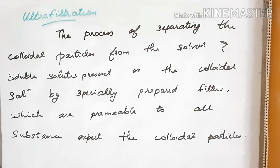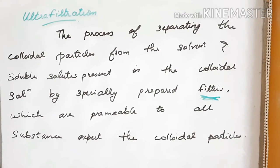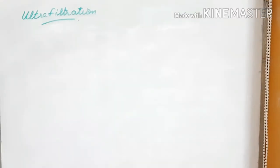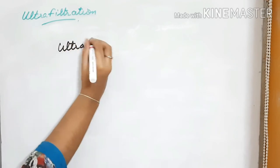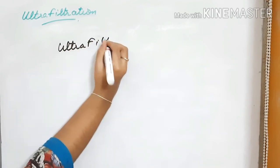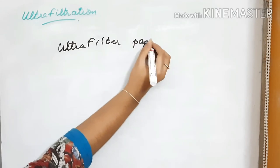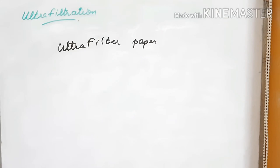This is the freshly prepared filter — the ultra filter paper. You can simply use filter paper, but this is a special type of filter paper. Ultra filter paper may be prepared by soaking the filter paper in a collodion solution.